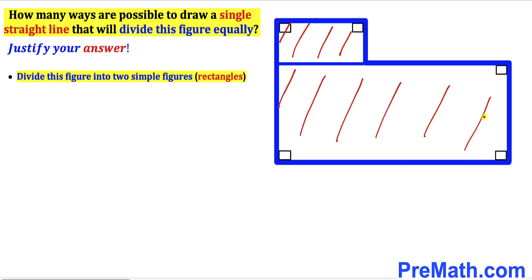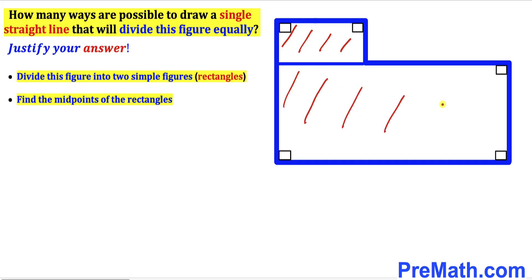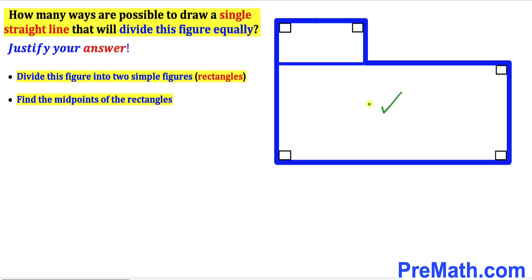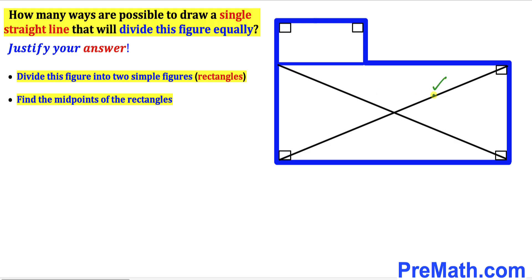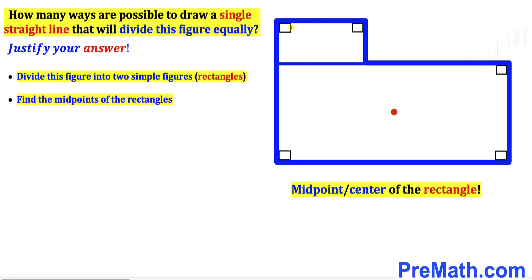Our next step is to find the midpoint of each of these rectangles. Let's focus on the first rectangle and draw its two diagonals. Both diagonals intersect each other at one point, and this intersection point is called the midpoint — or center — of this rectangle.